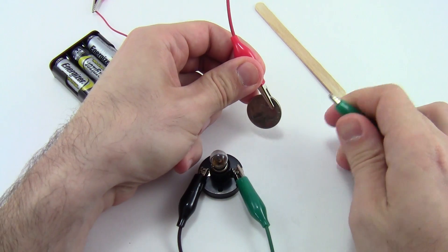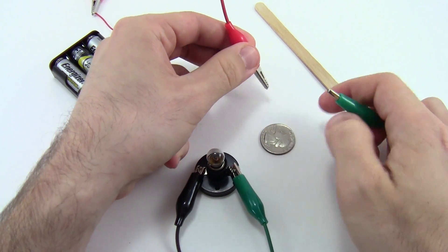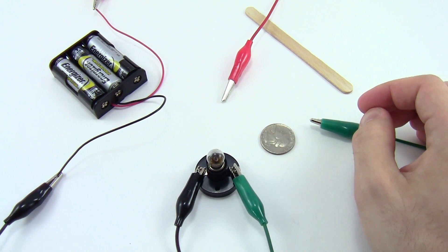You can try this with all sorts of other materials and objects you can find around your house to classify whether they are conductors or insulators.